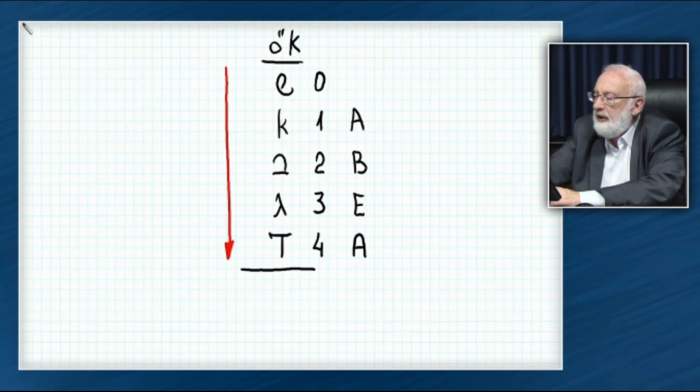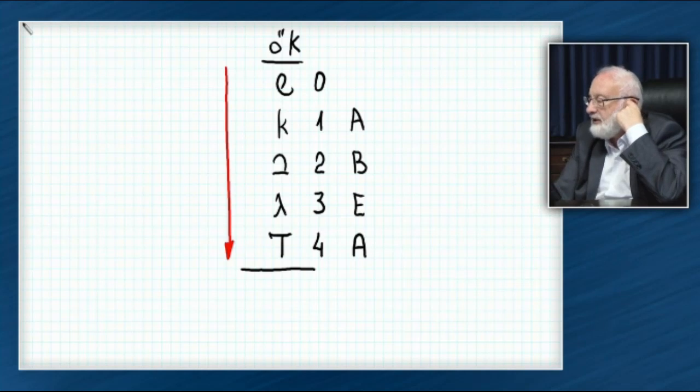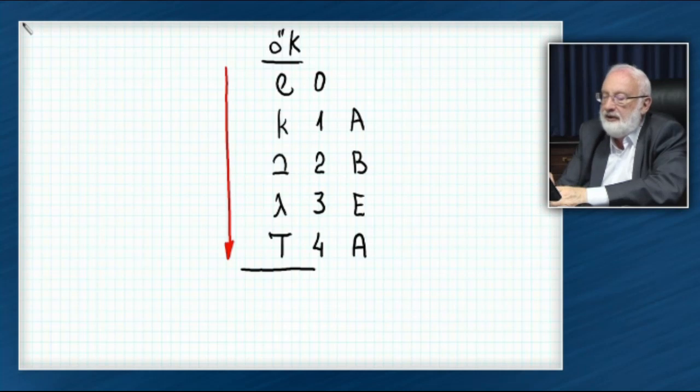To level Aleph, 1. Bet is 2, Gimel is 3, Dalet is 4. That's how the abundance cascades.